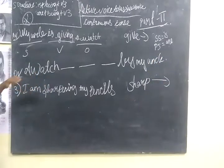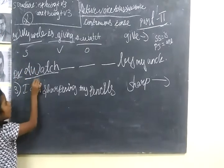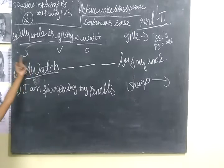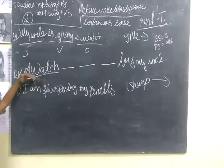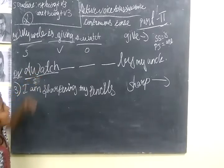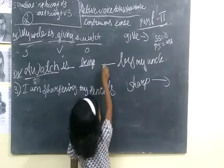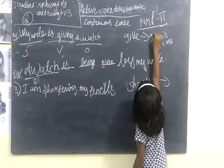In this, we are going to see the subject — that is 'a watch'. So the object is becoming the subject. Now, the object is singular, so we should see: 'is being + verb 3' for singular, or 'are being + verb 3' for plural. The object is singular, so we take the first one. We write: 'is being given'.